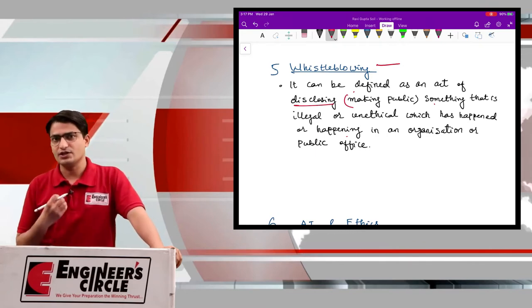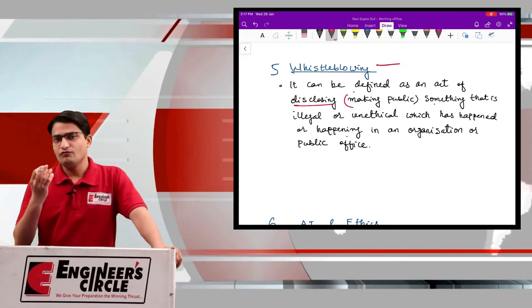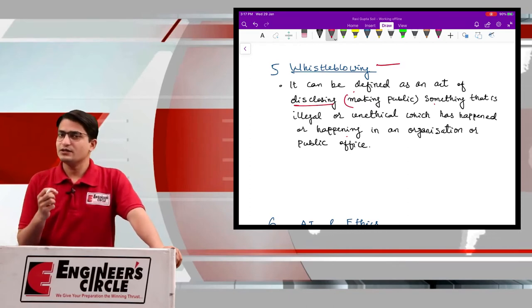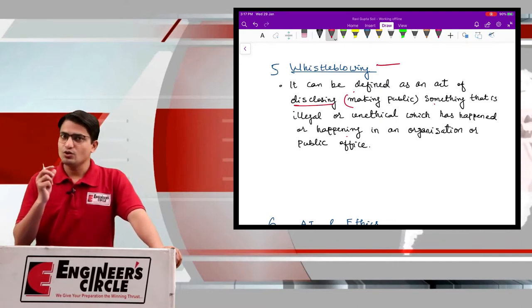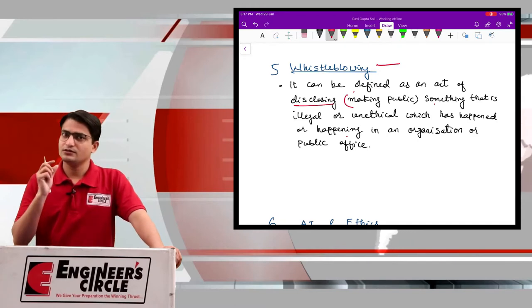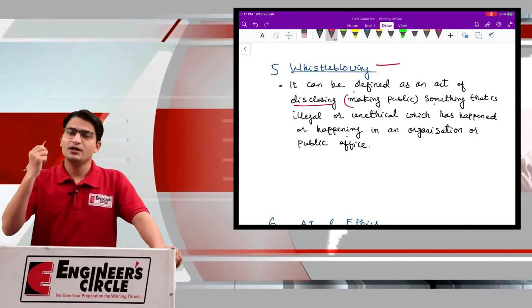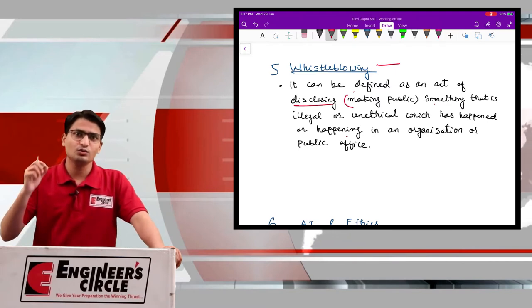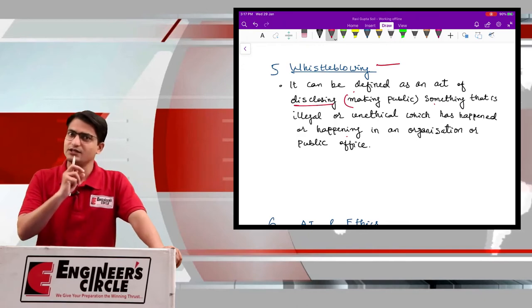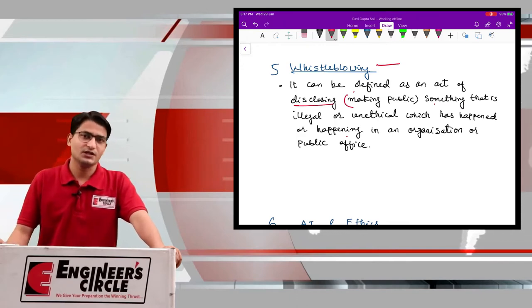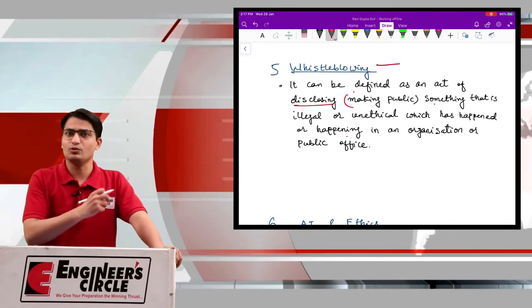You are a part of an organization, you are an employee of an organization, and what you are observing is that some unethical practices are going on. So you are making such illegal act known to the outside world. You are disclosing about that unethical conduct happening in the organization. Such act is called as whistleblowing.